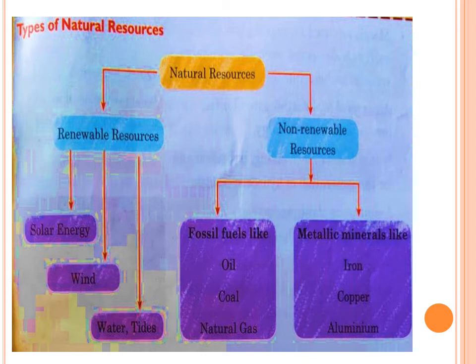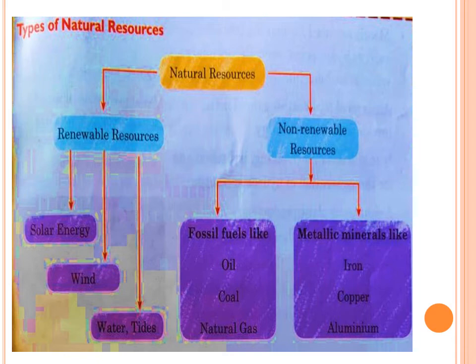Non-renewable resources are further divided into fossil fuels and metallic minerals. Fossil fuels — oil, coal and natural gas — are basically developed from the fossils of dead plants or animals, that is why they are called fossil fuels. And then you have metallic minerals, that is iron, copper, and aluminium. These are all non-renewable resources.